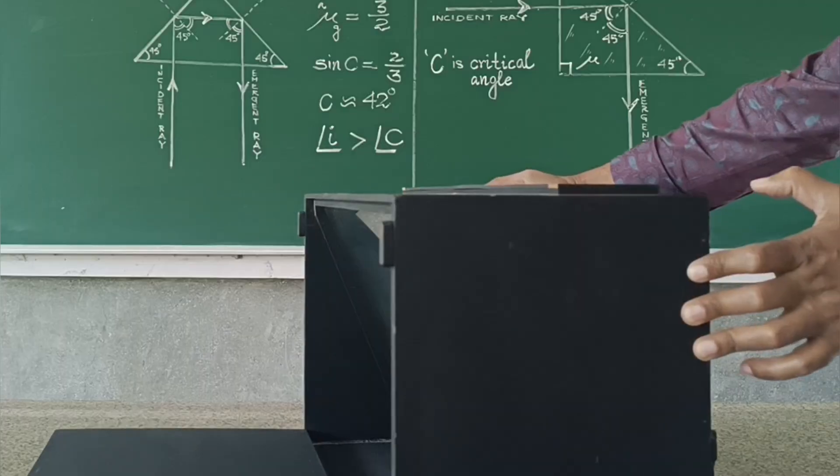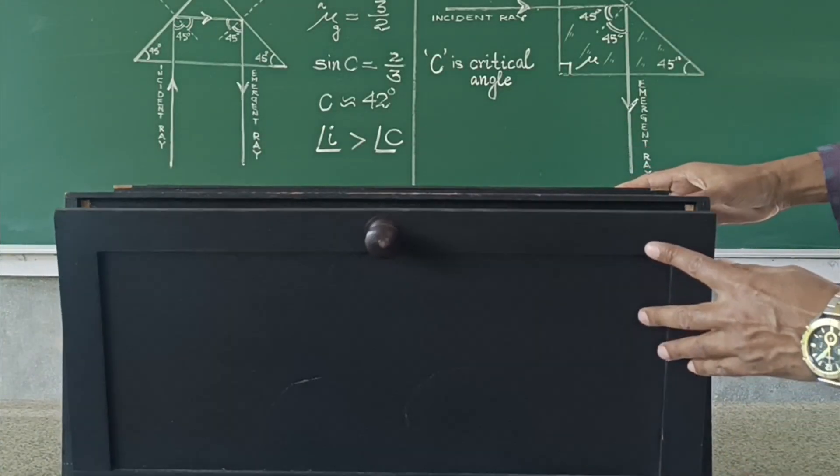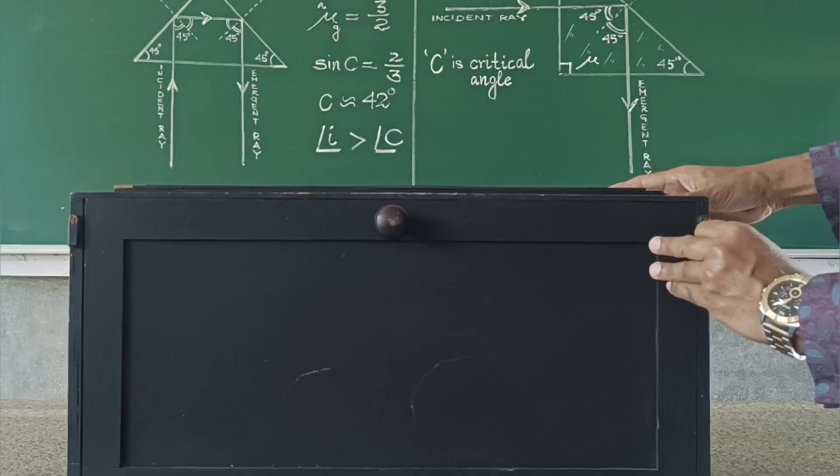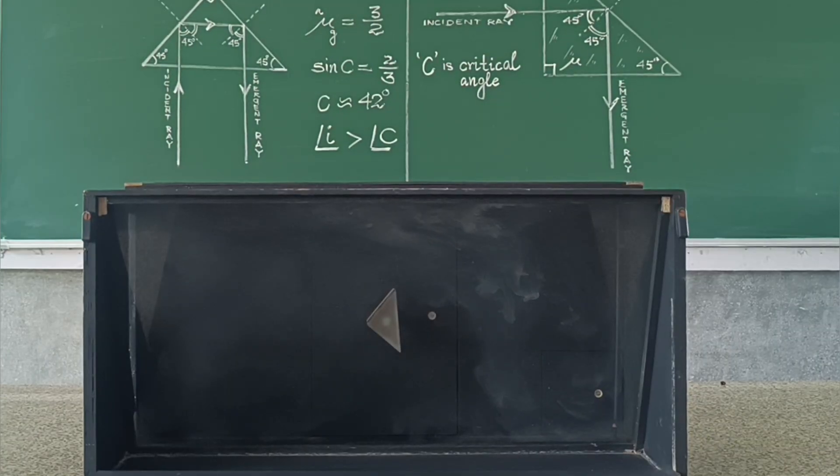The observation window is a clear, transparent window or panel and it is strategically placed to allow a light source to enter and for observations to be made from specific angles.